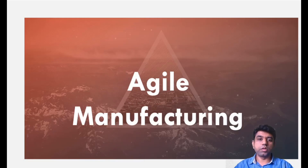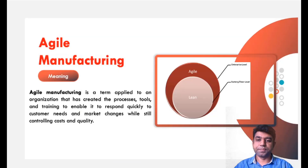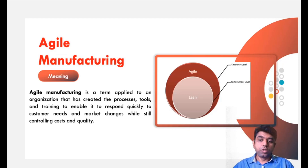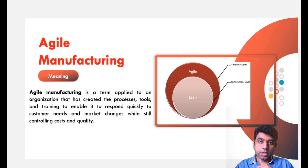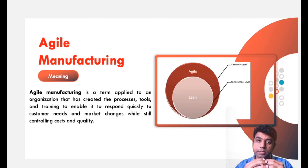Now in today's class we are going to discuss about Agile Manufacturing. Agile Manufacturing is basically the term which is applied to an organization that has created the processes, tools and training to respond quickly to customer needs and market changes while still controlling the cost and quality. This has become a prime objective. According to the need of the customer the product should be made, but the problem is the need of the customer is changing every now and then.